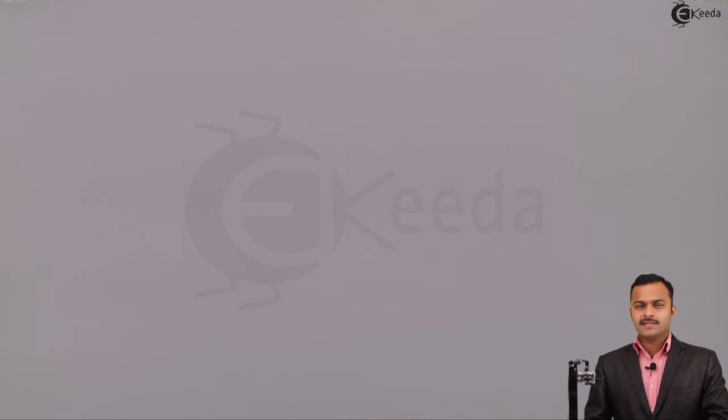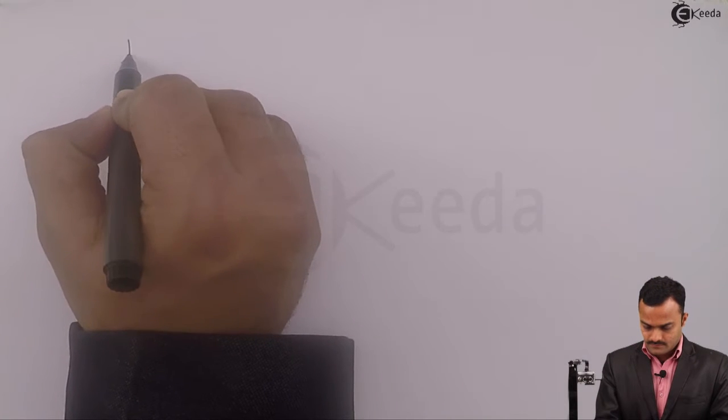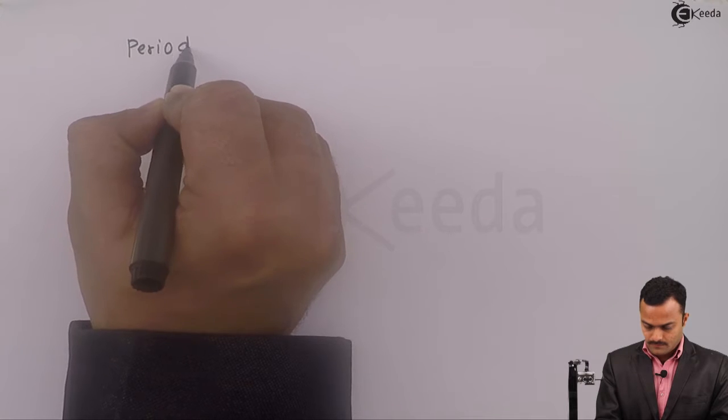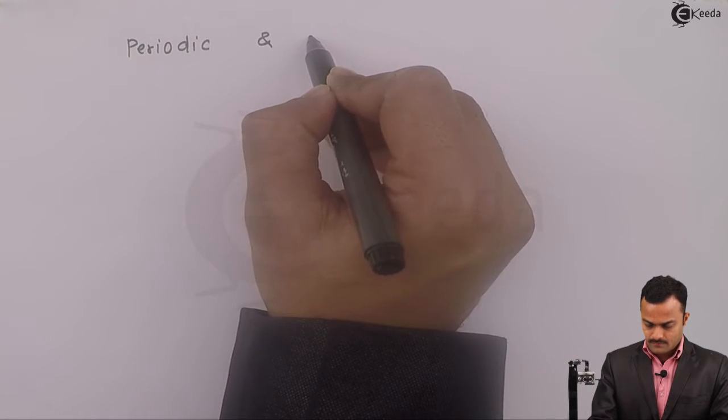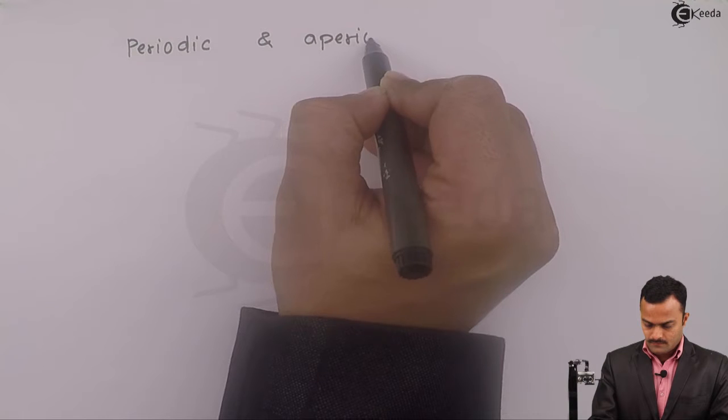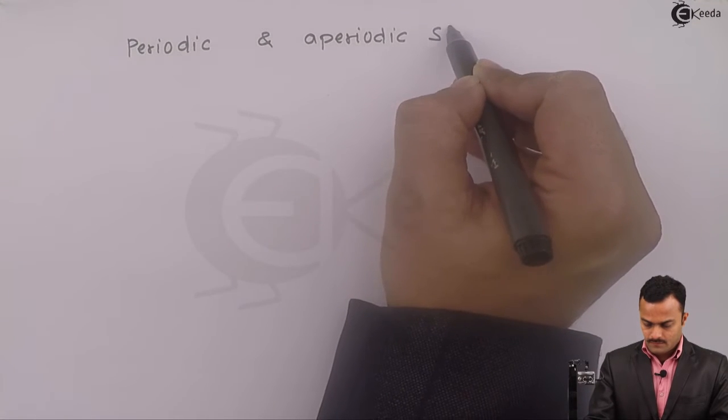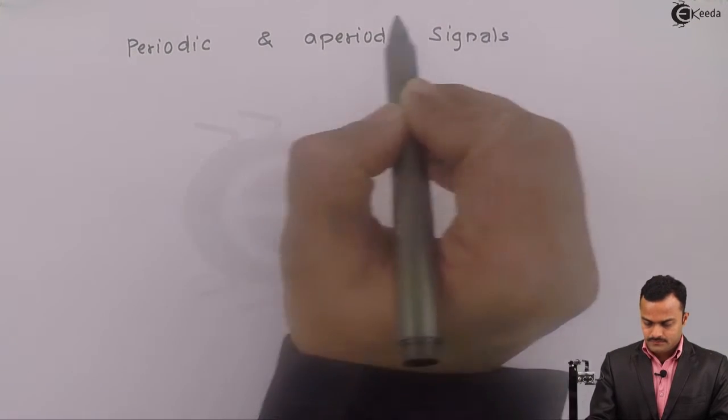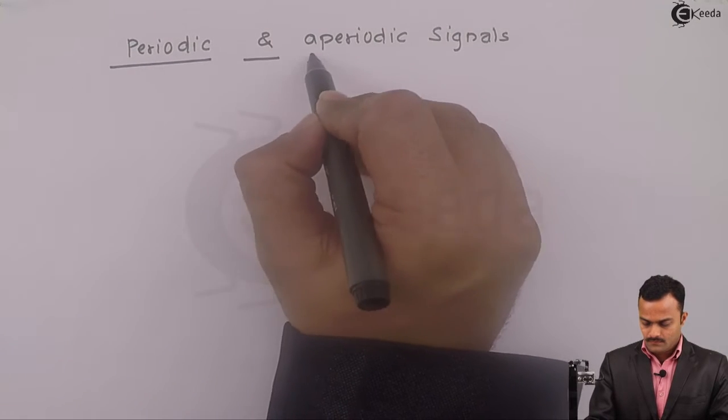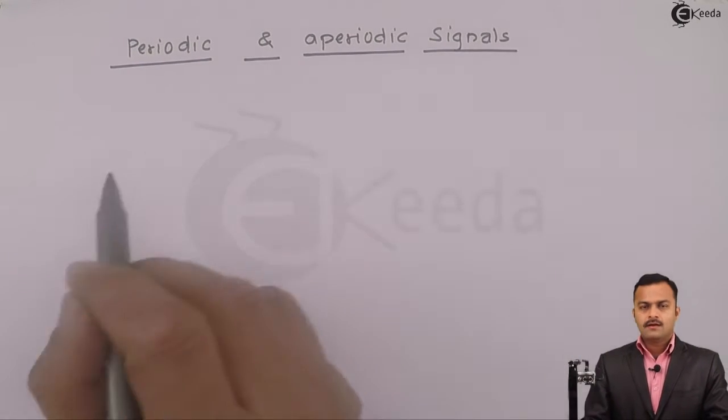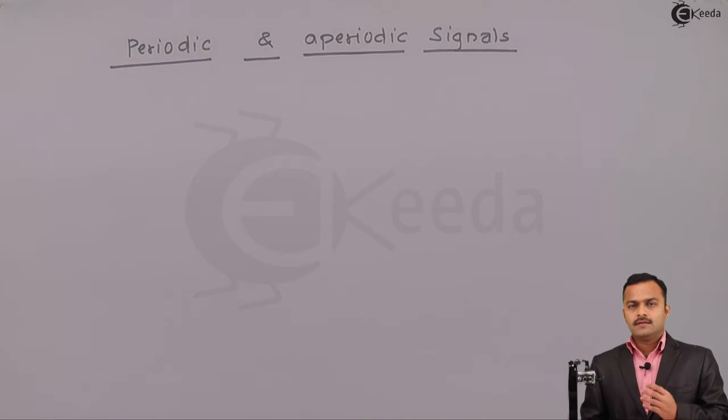Hi friends, in this video we are going to see classification of signals, that is periodic and aperiodic signals. As the name suggests, the signal which will repeat itself after some time interval is called a periodic signal.